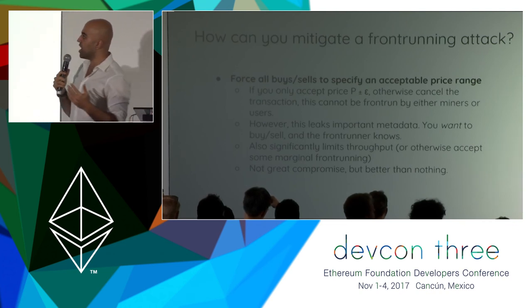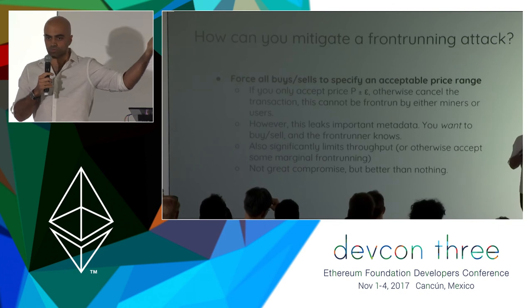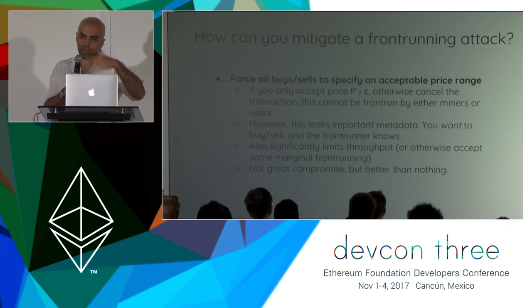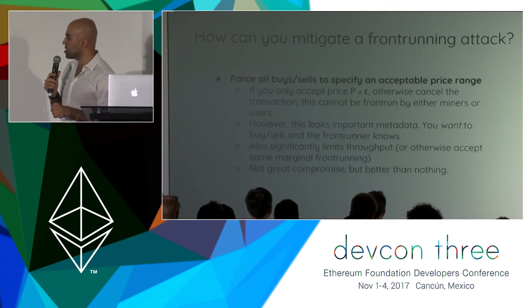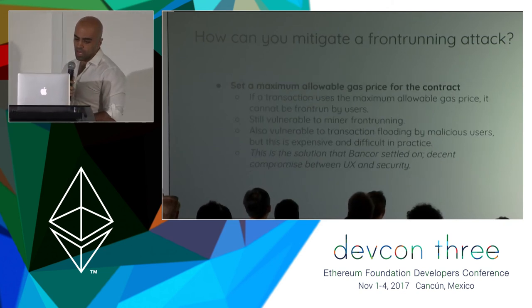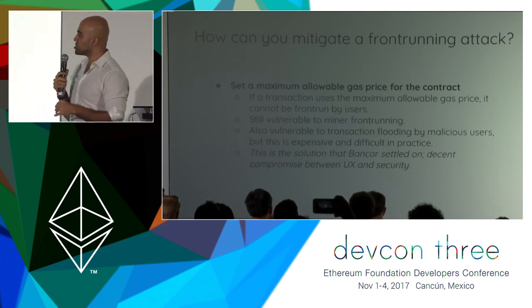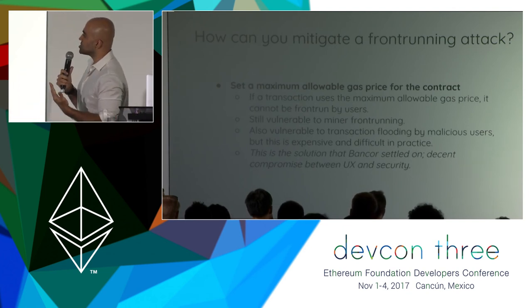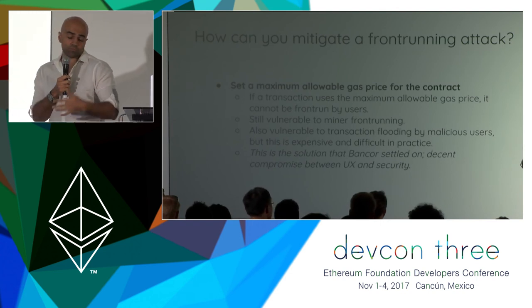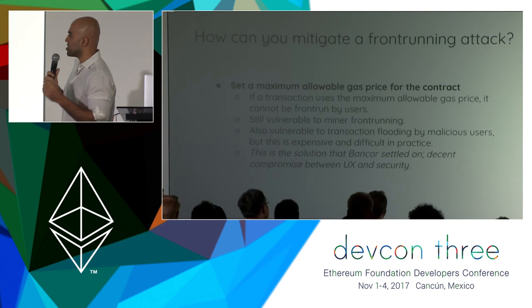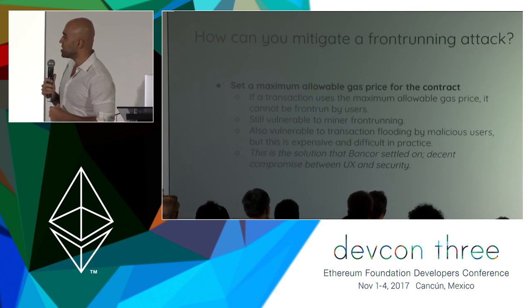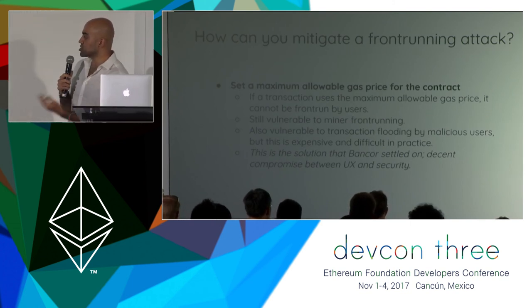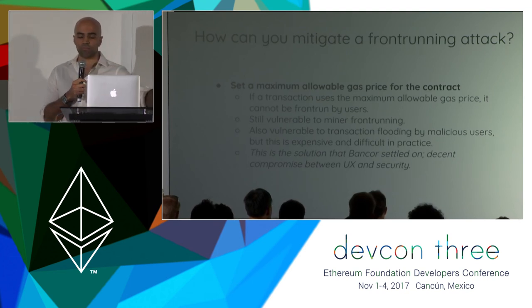This approach also significantly limits your throughput — if lots of transactions are happening on Bancor, it's very hard to ascertain how wide that epsilon should be so your transaction doesn't get cancelled innocuously. You have to accept some margin of front running. However, you can set a maximum allowable gas price for the contract, which puts an upper limit on what people are allowed to pay to get in front of each other. This prevents user front running, though it's still vulnerable to miner front running since miners aren't beholden to accepting these rules. It's also vulnerable to transaction flooding by malicious users, but that's expensive and difficult in practice. This is the solution Bancor settled on — a decent compromise between UX and security.